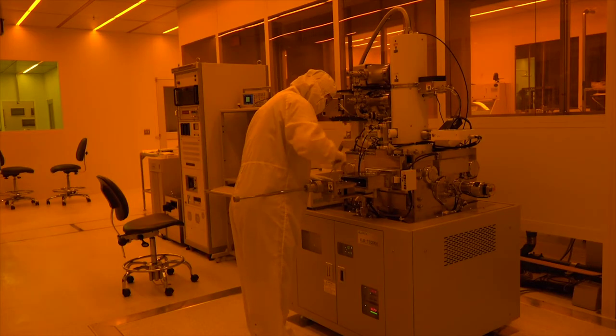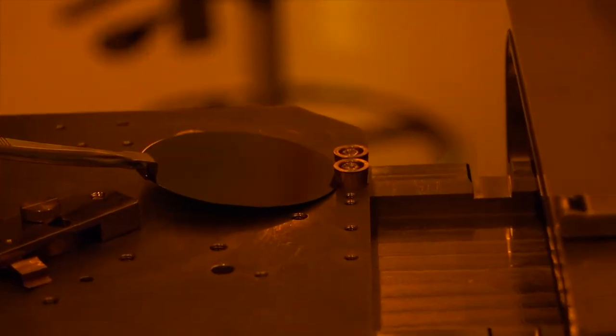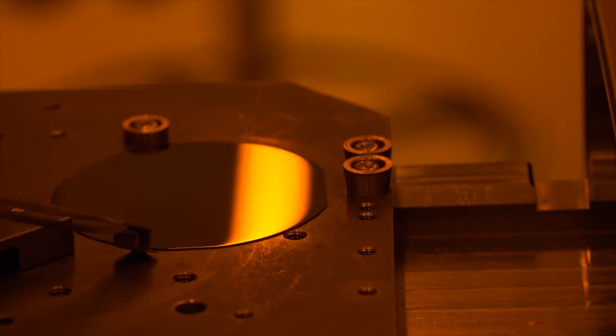The load lock is connected to the high vacuum EBL chamber by a door that we keep closed while we load our sample. This enables us to keep the EBL chamber under high vacuum while we load our sample into the load lock. There is a small platform in the load lock for holding our sample.